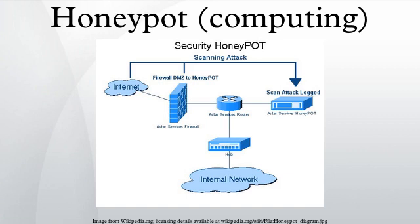Malware honeypots are used to detect malware by exploiting the known replication and attack vectors of malware. Replication vectors such as USB flash drives can easily be verified for evidence of modifications either through manual means or utilizing special-purpose honeypots that emulate drives. Malware is increasingly used to search for and steal cryptocurrencies, which provides opportunities for services such as Bitcoin Vigil to create and monitor honeypots by using small amounts of money to provide early warning alerts of malware infection.